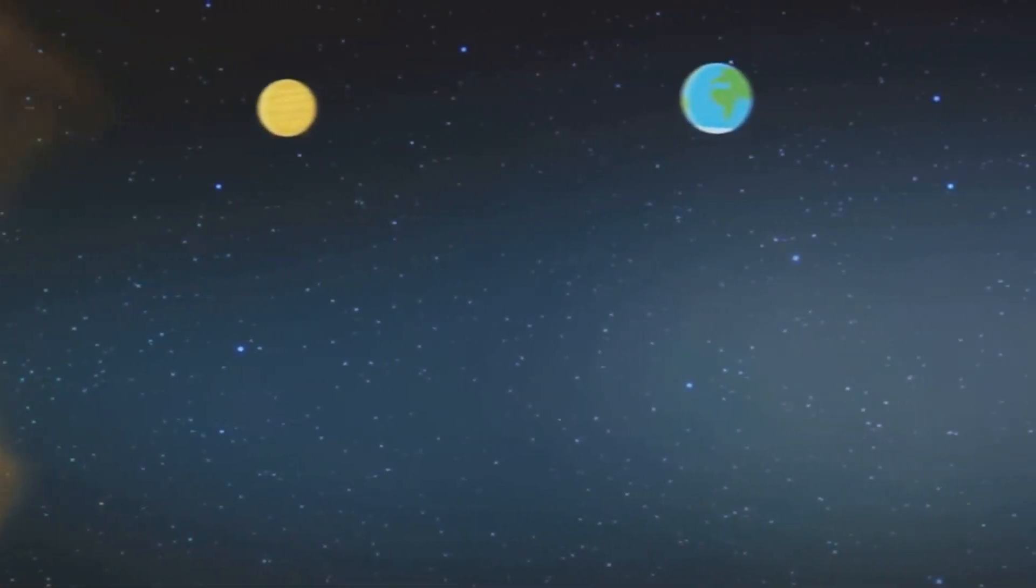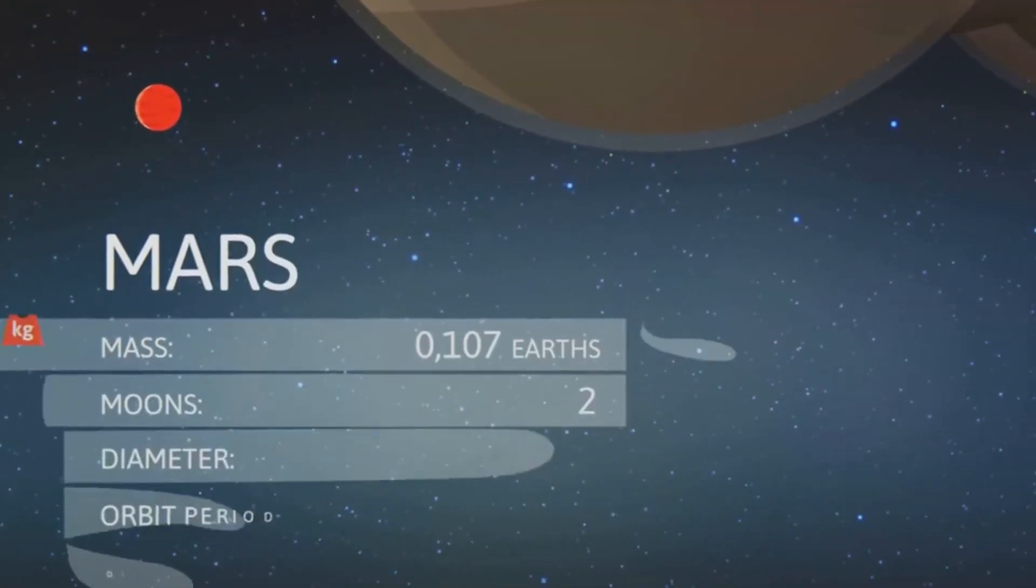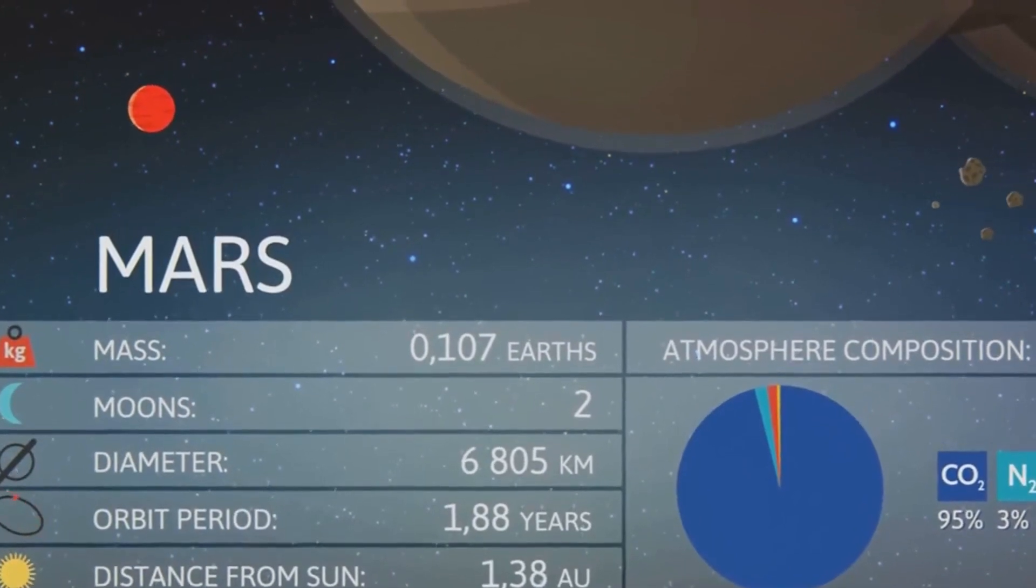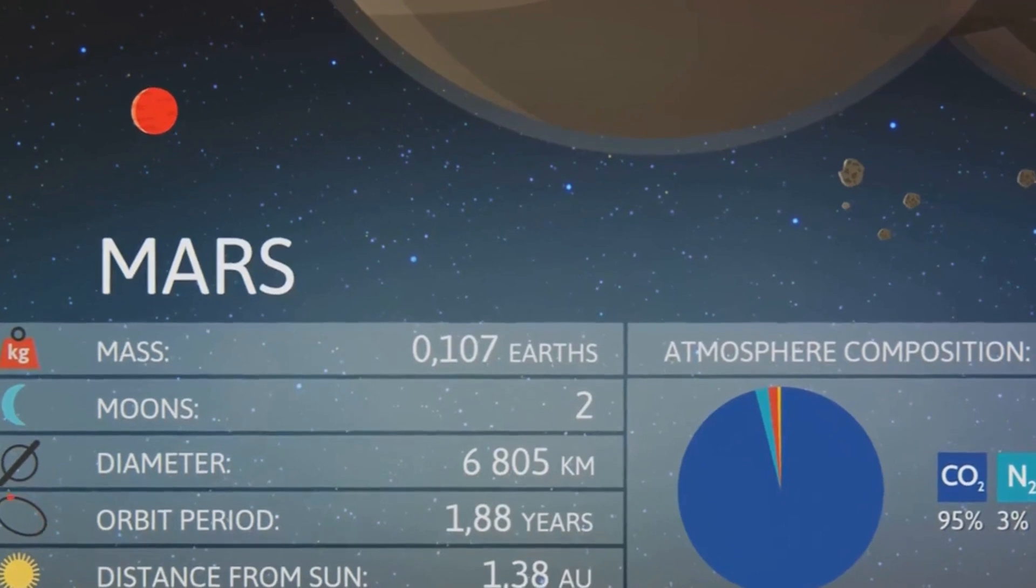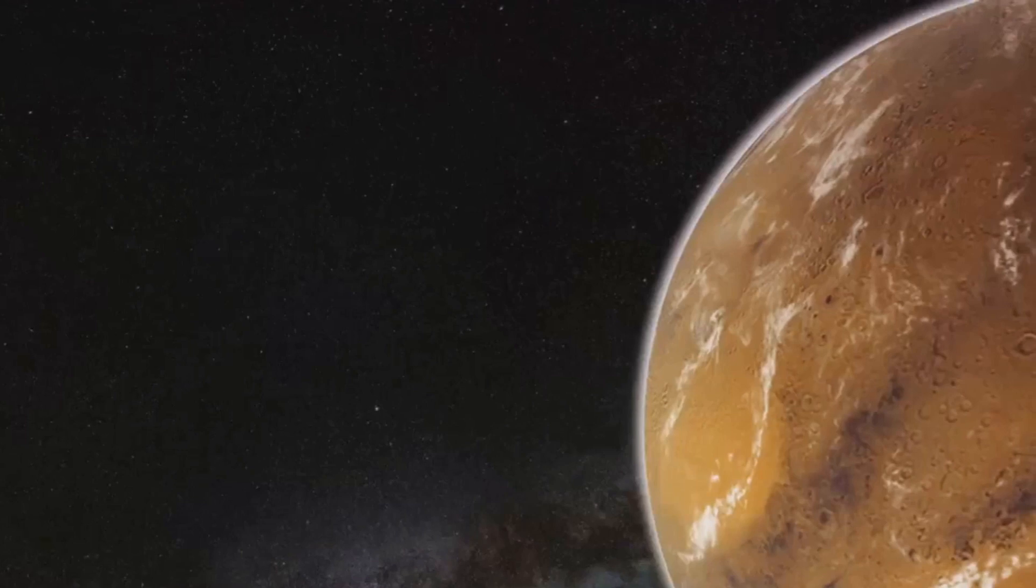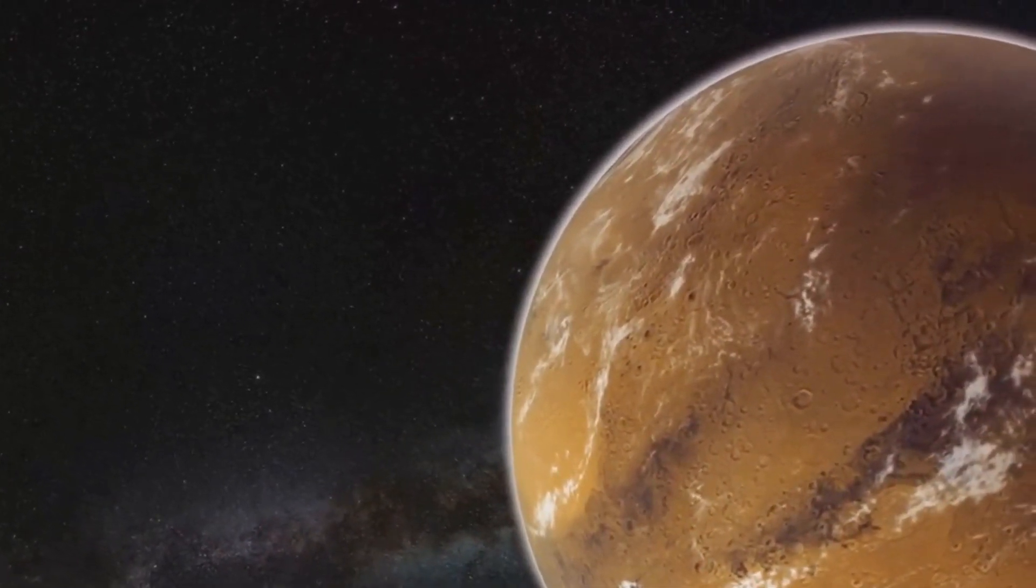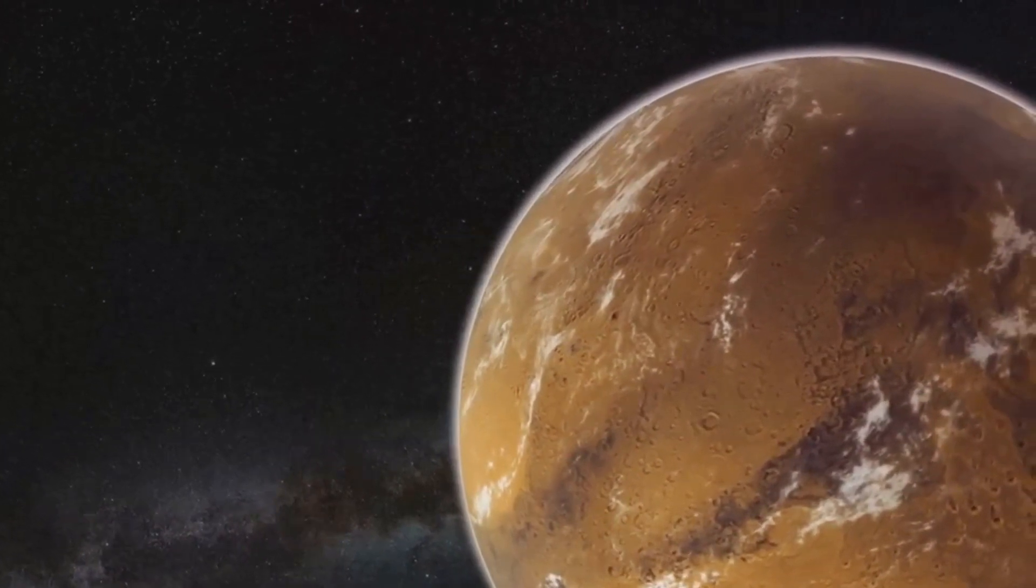Larger planets like Earth retain heat more effectively than smaller ones due to their greater mass. This slower cooling process allows Earth to maintain its internal heat, which drives geological processes such as plate tectonics and volcanic activity. These processes recycle materials and release gases from the interior, contributing to the maintenance of Earth's atmosphere and climate stability.